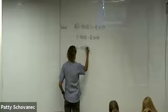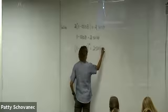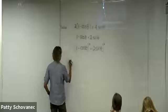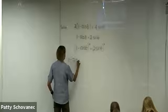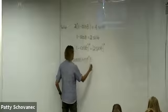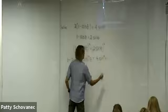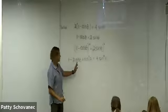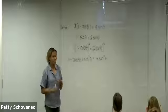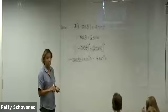My goal is to use the Pythagorean identity, which has squares, so I've got to square both sides to get those in there. When I square the left-hand side I get 1 − 2cosθ + cos²θ, and on the right-hand side I get 4sin²θ. Since I have a cosine to the first power, I'm going to replace sin²θ using sine squared plus cosine squared equals one, so sin²θ = 1 − cos²θ.